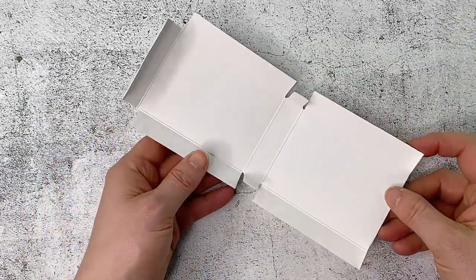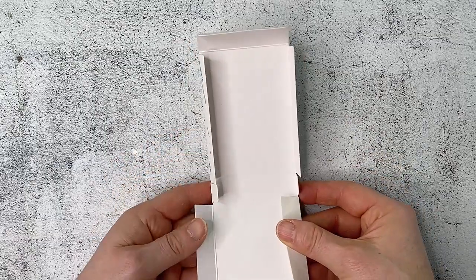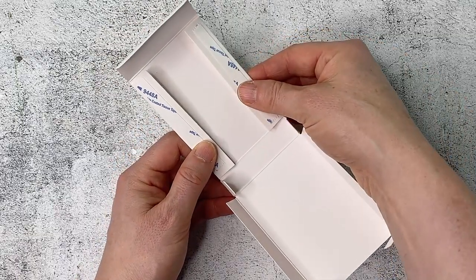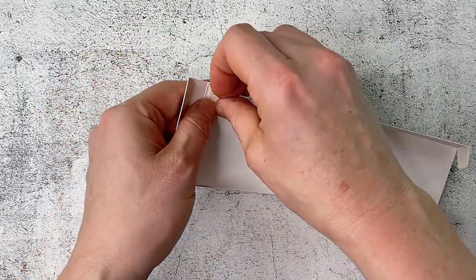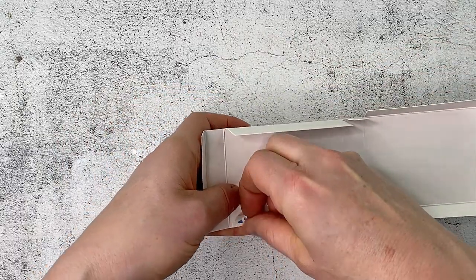So first let's start with the box. I've already creased all of them with my bone folder and one of the great things about this box is that it actually already has the adhesive on it so you don't even need scissors or adhesive to put these together.